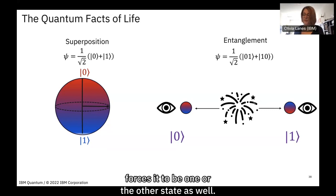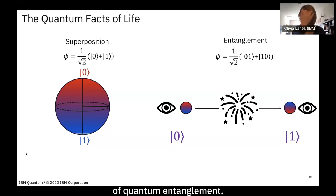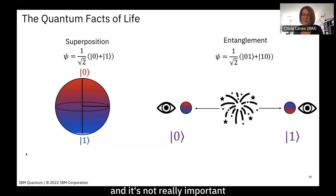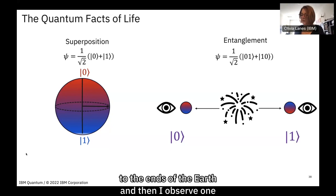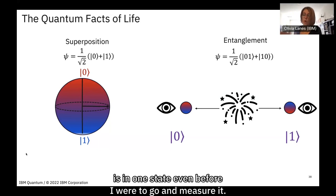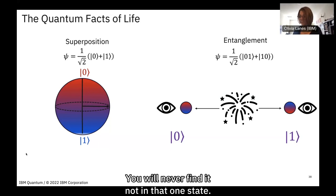That's normally how we define a superposition until measurement forces it to be one or the other state. What we haven't discussed yet is quantum entanglement. If I have two particles each in a superposition and I entangle them together and send them to opposite ends of the earth, then I observe one and note it to be zero — that means the other qubit is automatically in the one state, even before I measure it.